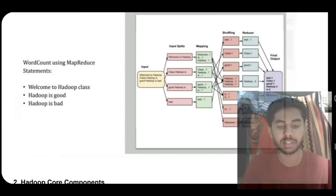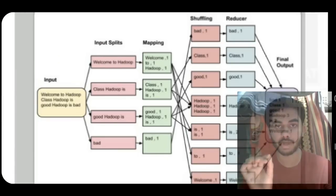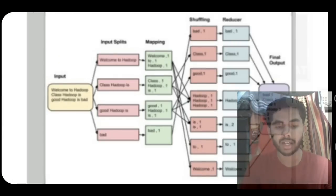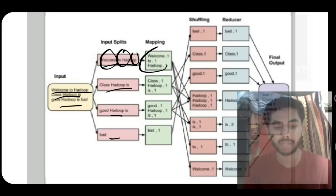For an example, consider three sentences: 'Welcome to Hadoop class,' 'Hadoop is good,' and 'Hadoop is bad.' MapReduce calculates how many times a particular word has appeared. It separates the sentences, then in each sentence it counts how many words have occurred and how many times.